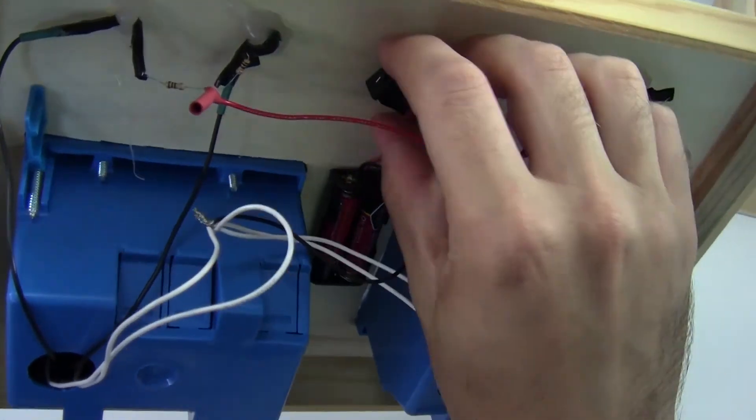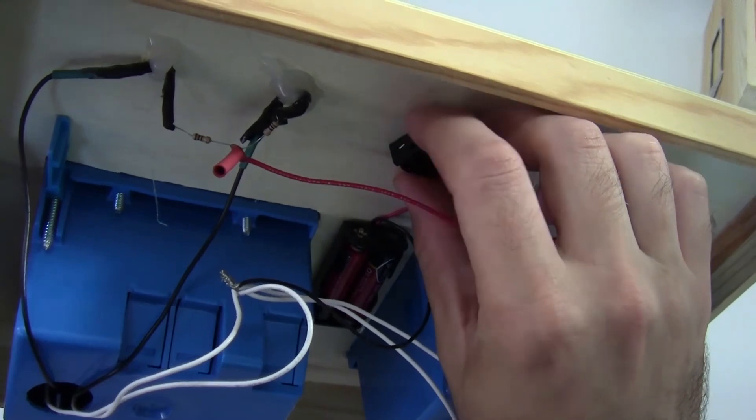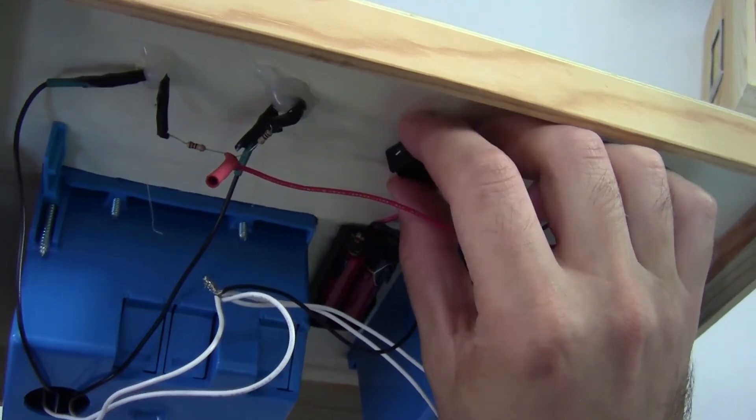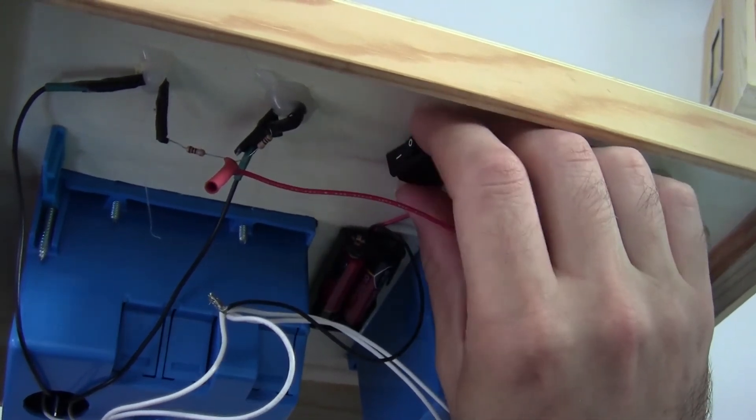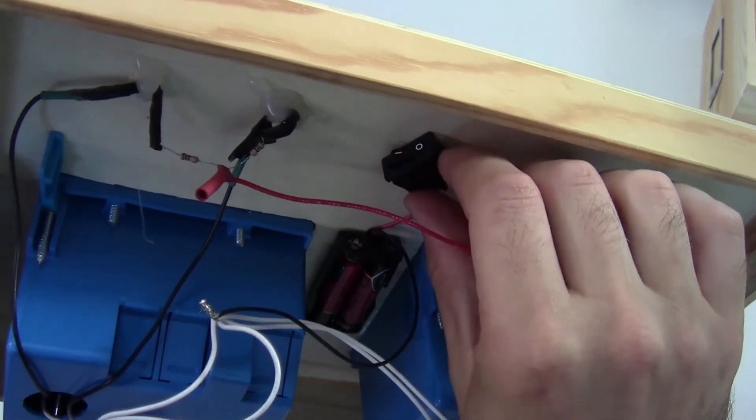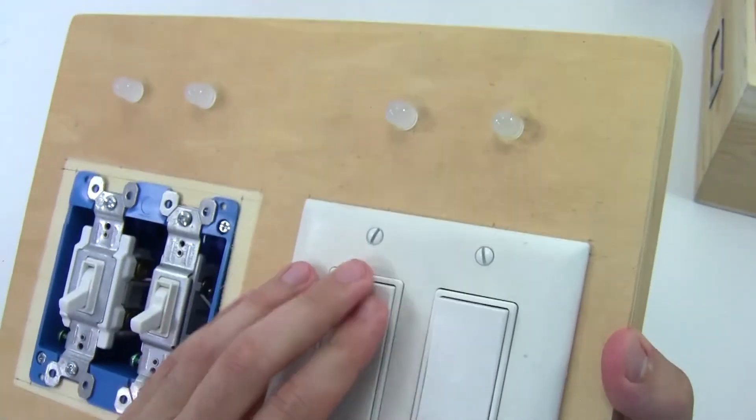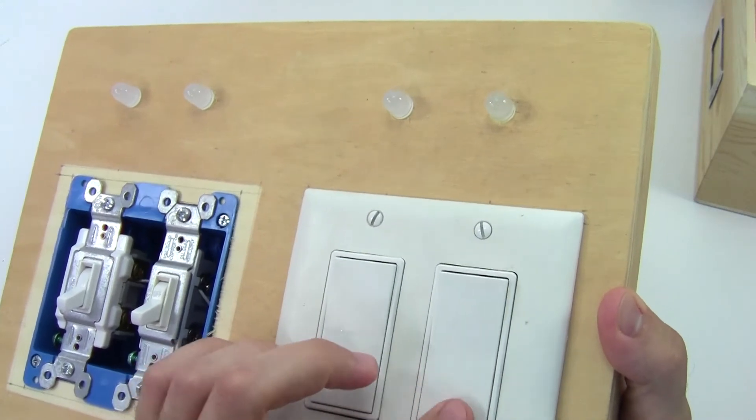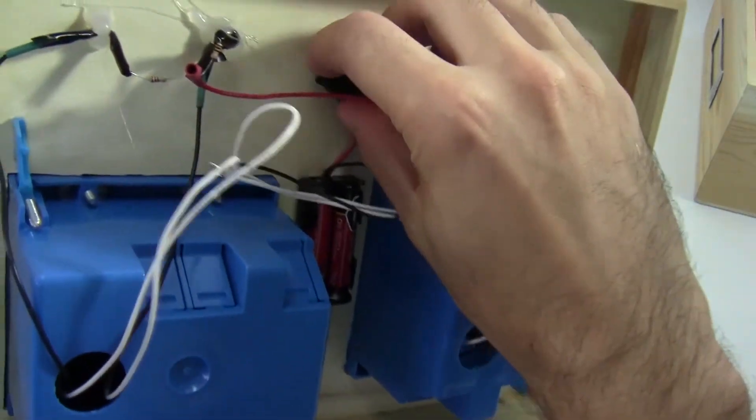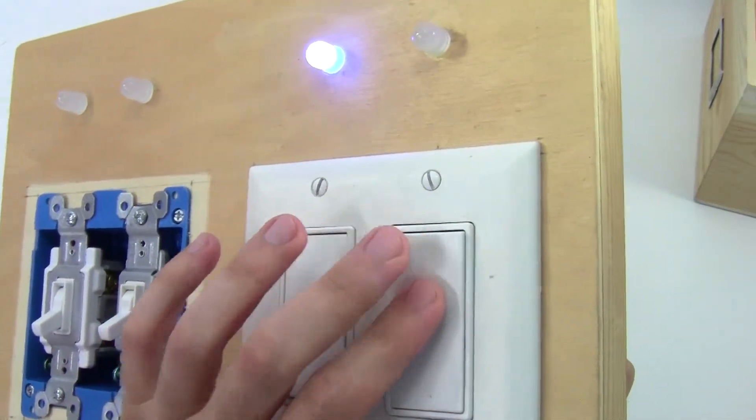I do have one more master on-off switch in here, so if you're worried about kids leaving the switches on and draining the battery over time, you can turn the whole thing off with that master on-off switch, and then that overrides the front switches so the kid can't turn them on. But if you want to leave that on for them to play with it, you just turn that switch on, and then these front switches will work.